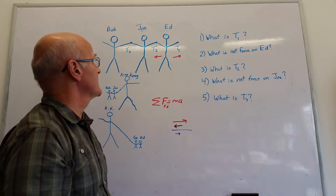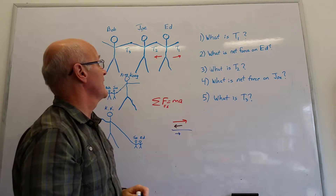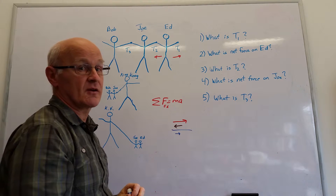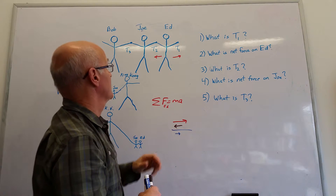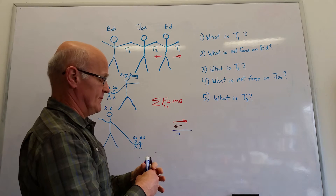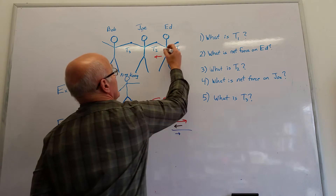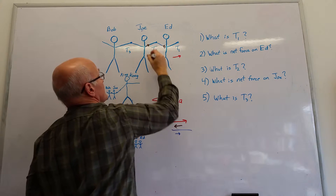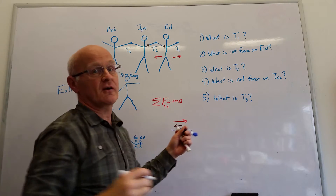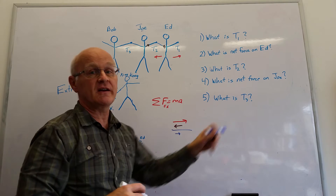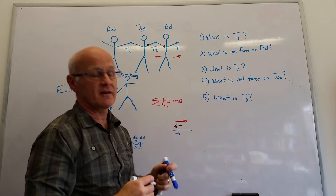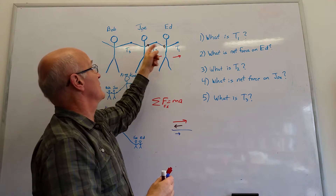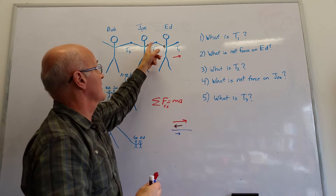The next question is: what is the tension or net force on Ed's trailing arm? Only about one in seven of you got this right the first time, so we need to spend some time on it. Essentially, what is T2? T2 is acting on Ed's shoulder and also on Joe's shoulder. Whatever pull Ed feels on his trailing arm is the same pull Joe feels on his leading arm — the tension between two connected bodies is the same, but it pulls Ed backwards and Joe forward.